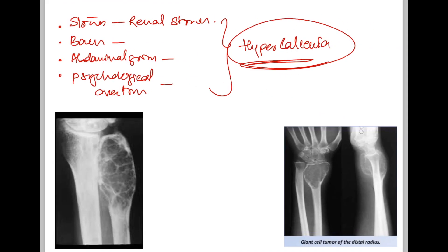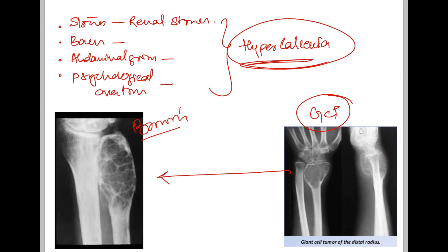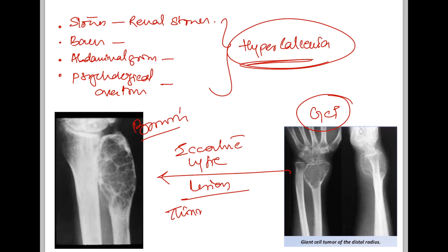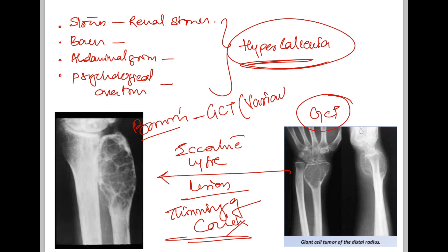Looking at the X-rays: here you have a giant cell tumor, also known as osteoclastoma, and here you have a brown's tumor that occurs in hyperparathyroidism, also known as osteitis fibrosa cystica. Both lesions appear almost the same — eccentric lytic lesions with thinning of the cortex. Remember, brown's tumor is considered a giant cell tumor variant.